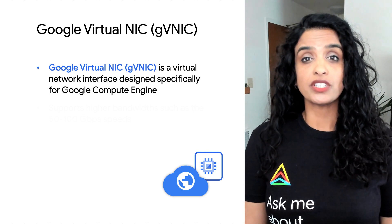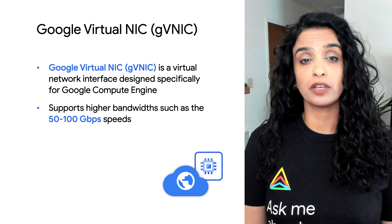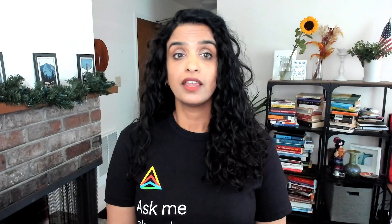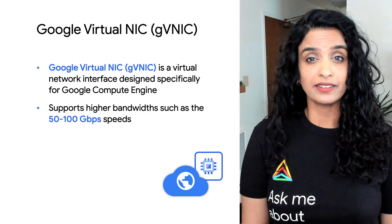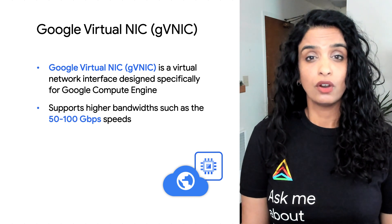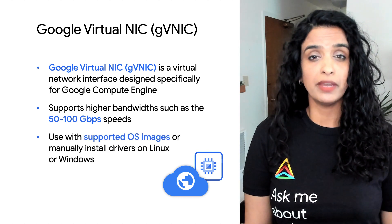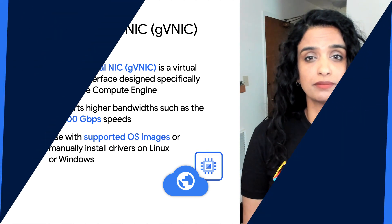GVNIC supports higher network bandwidths, such as 50 to 100 gigabits per second. These can be used for distributed workloads on VMs that have attached GPUs. If you want to use GVNIC, you can use it on a supported OS, or on an unsupported OS by manually installing the drivers for Linux or Windows.